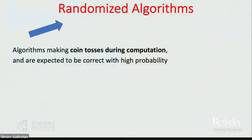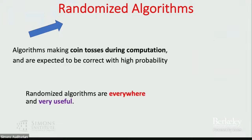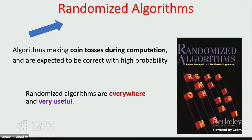First, let me introduce randomized algorithms. These are algorithms that make random coin choices during computation, and they are only expected to be correct with high probability. They are essentially everywhere in computer science, very useful, and have thousands of applications. There are many books about them.